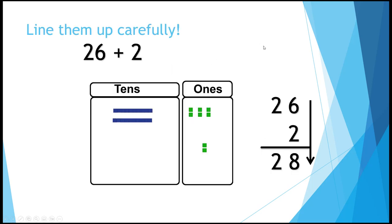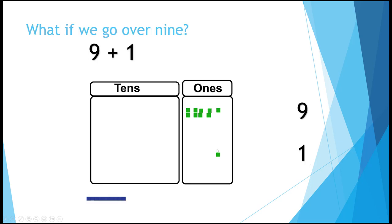Now we have to line them up carefully. If we're adding 26 and puny little 2, we need to put the 2 digit under the 6 digit. We need to add 6 ones to 2 ones. We're not adding any tens. 26 plus 2 is 28.